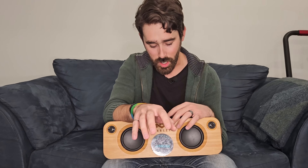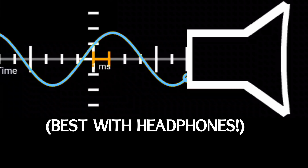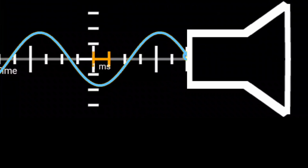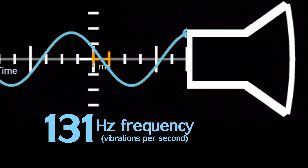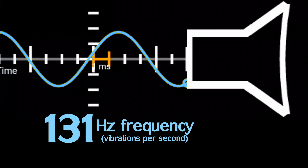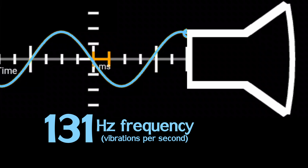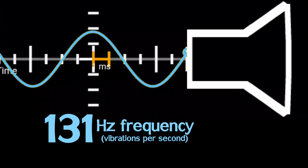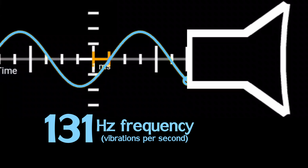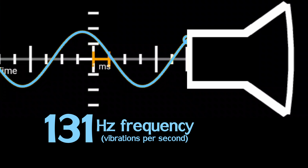This is a concept called superposition and it's easiest to understand using pure tones. What you're hearing is a 131 Hz frequency, which means that the diaphragm inside your speaker is vibrating back and forth 131 times every second to produce the sound. The squiggle you see on screen is a visual representation of that vibration — very smooth, predictable, repetitive, always going up and down by the same amounts.